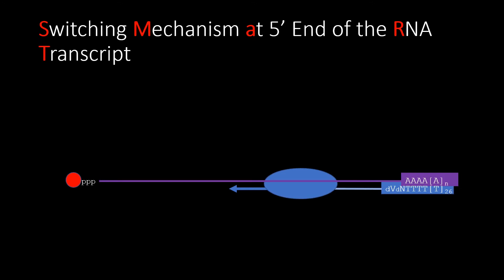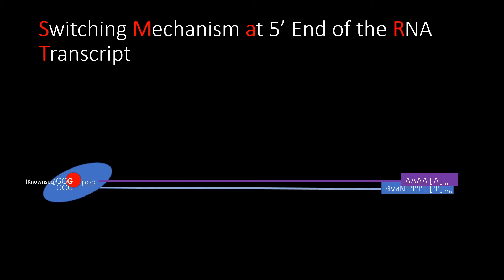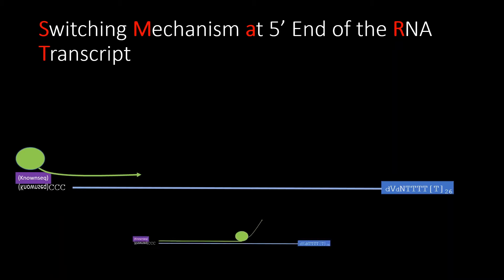Once you've targeted those untemplated cytosines with your known-sequence adapter that has an overhang with guanines, the reverse transcriptase can jump back on and make a complement to your known sequence, which you can then target for second-strand synthesis. Another potential source of technical noise we're studying is whether the DNA polymerase falling off early could introduce a 5' bias. Hopefully, the result is double-stranded cDNA.